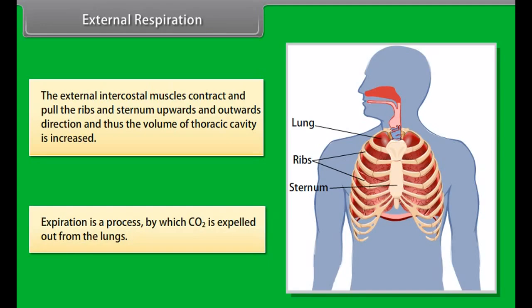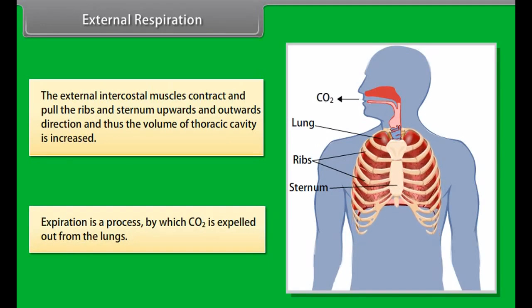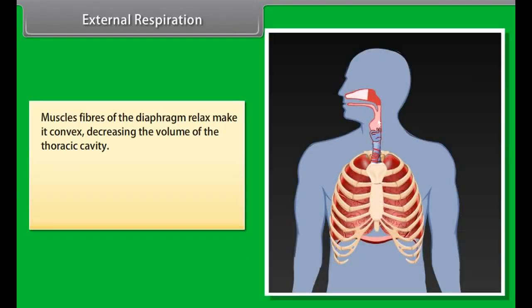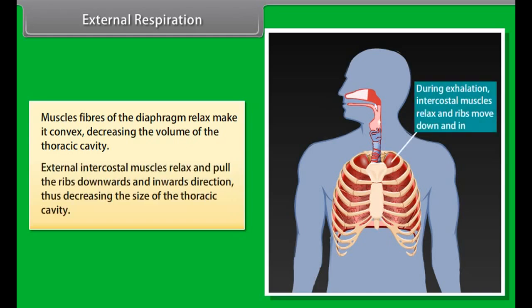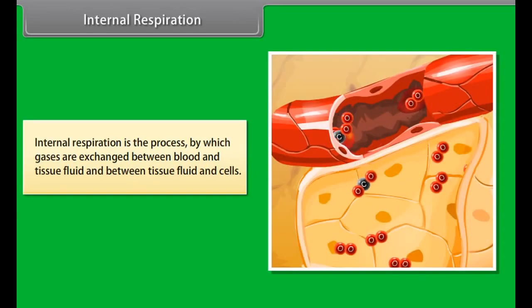Inspiration is the process by which fresh air enters the lungs. The diaphragm becomes flat and gets lowered by the contraction of its muscle fibers, increasing the volume of the thoracic cavity. The external intercostal muscles contract and pull the ribs and sternum upwards and outwards, further increasing the volume of the thoracic cavity.